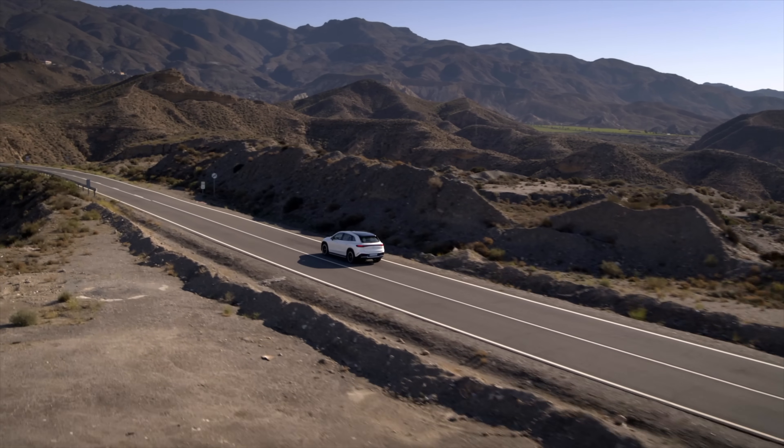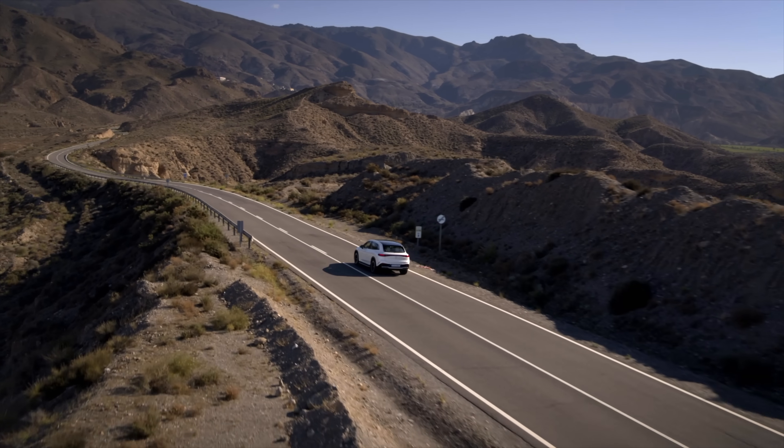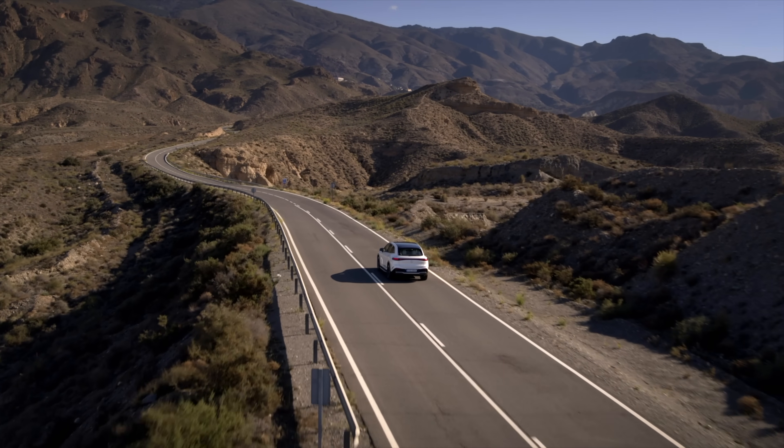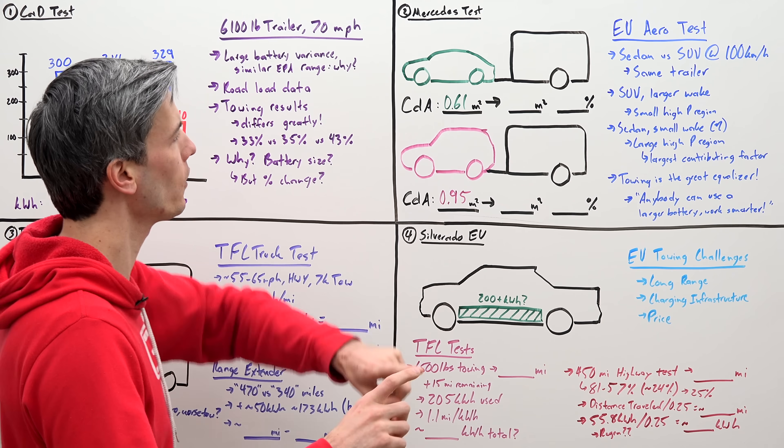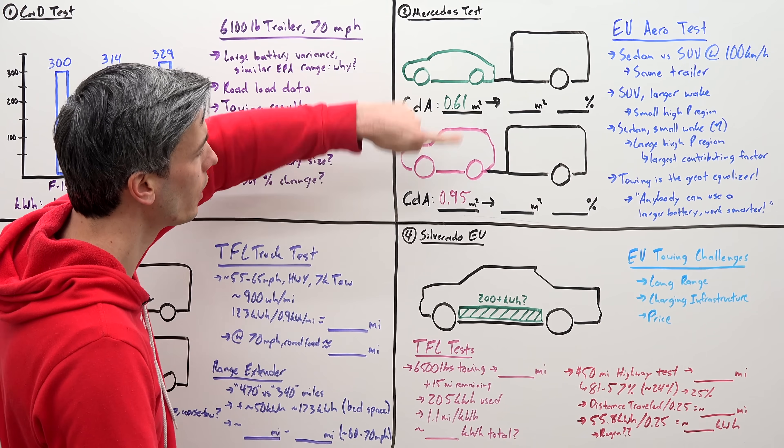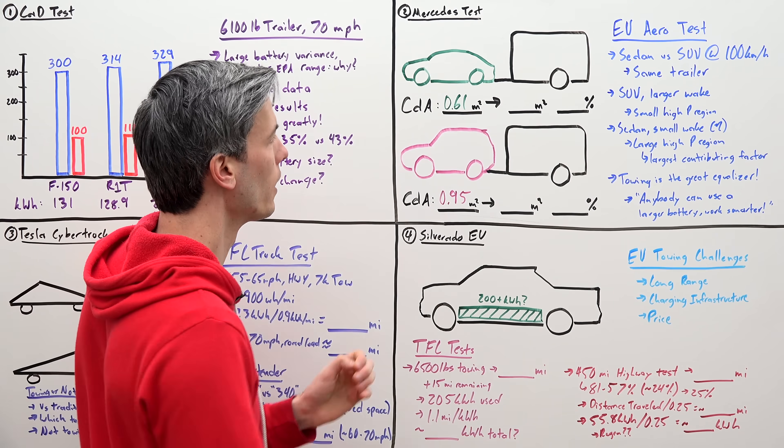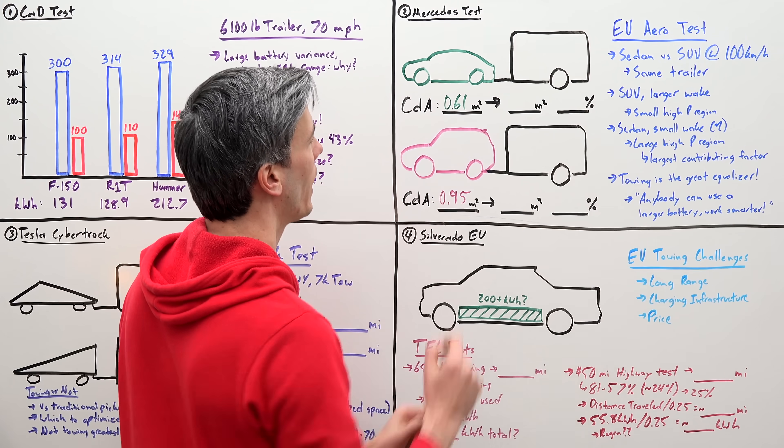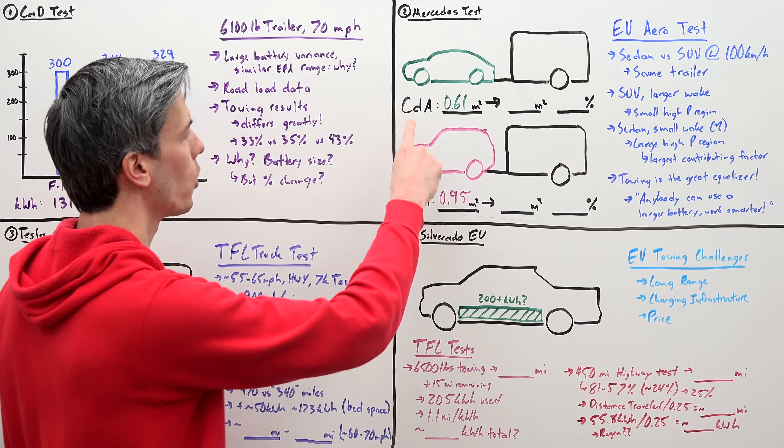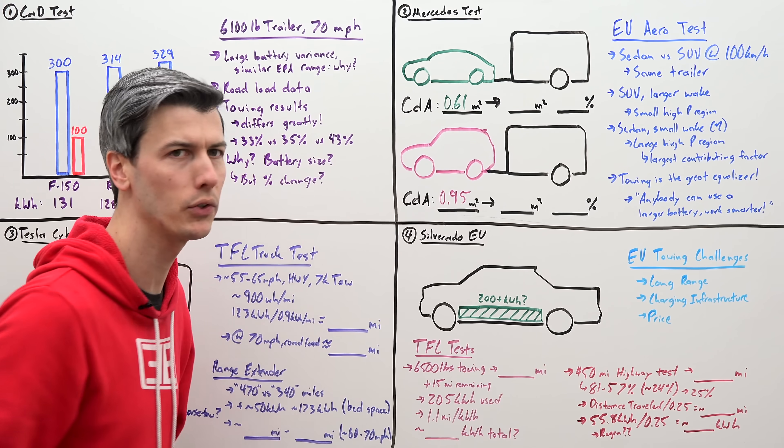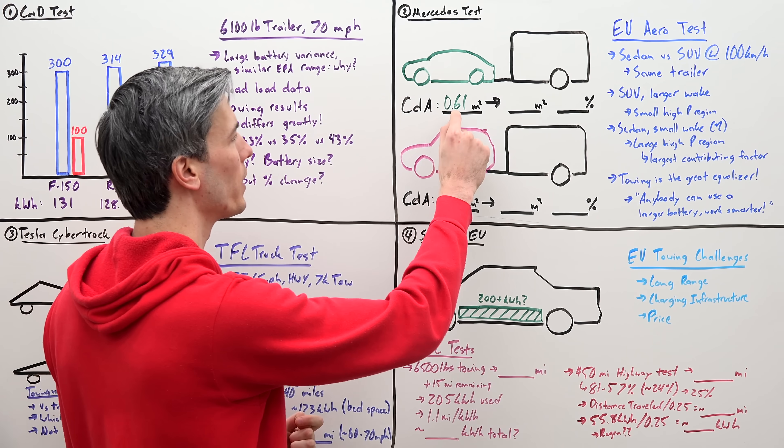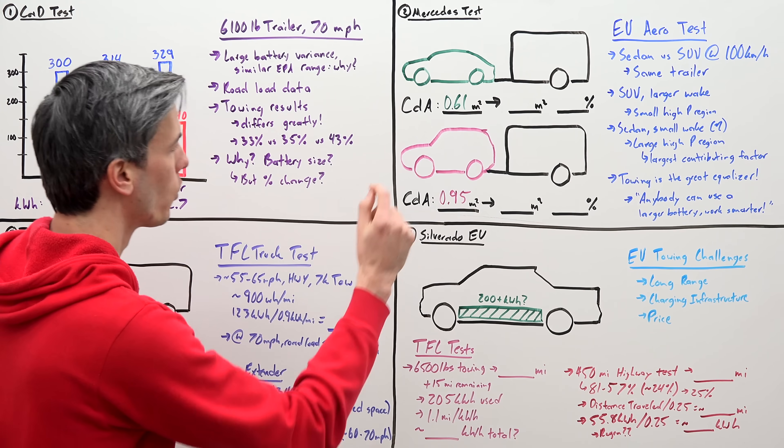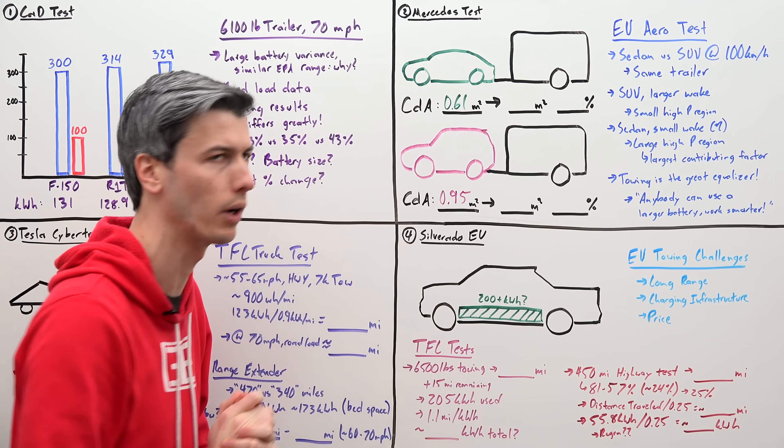Mercedes, however, conducted a fascinating study on electric vehicle towing that explains why this occurs. So what Mercedes did is they compared the aerodynamics of an electric sedan versus an electric SUV. First, without a trailer attached. And so what they found is that the coefficient of drag multiplied by the frontal area of the sedan turned out to be 0.61 meters squared. For the SUV, that turned out to be 0.95 meters squared.